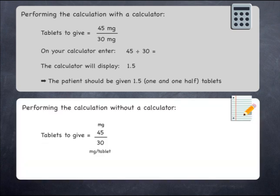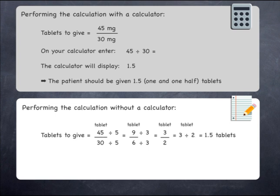To perform the calculation without a calculator, you can start by cancelling the units of milligrams on the bottom and top, which leaves a final unit of tablets. You can apply the 5 rule to 45 and 30 by dividing both numbers by 5, which gives 9 over 6. 9 over 6 can be divided by 3, giving 3 over 2, which is 3 divided by 2, which is 1.5 when you use short division. The patient should be given 1.5 tablets.